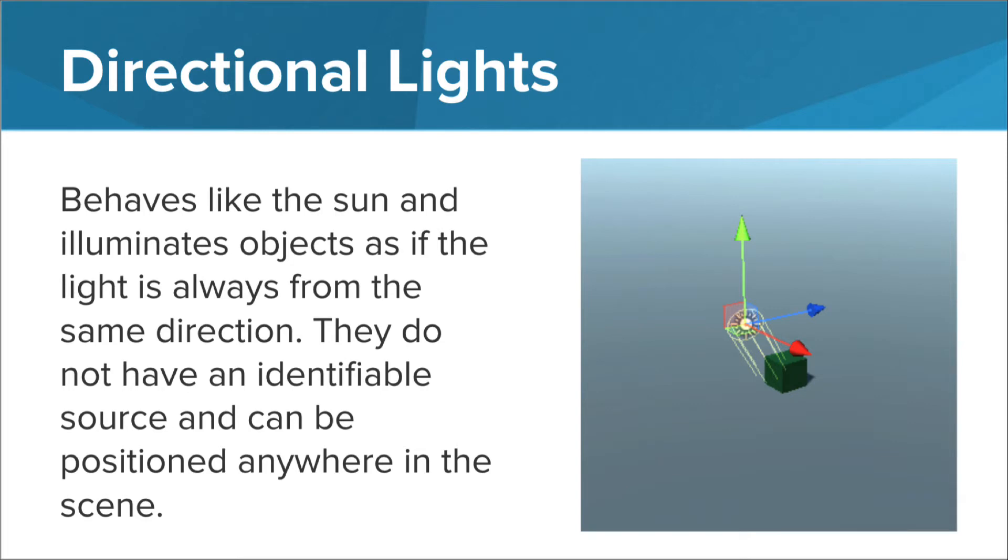Directional lights act like a sun in your game environment. They don't have an identified source and will light your scene the same no matter where it's positioned. New Unity projects typically include a directional light game object by default.